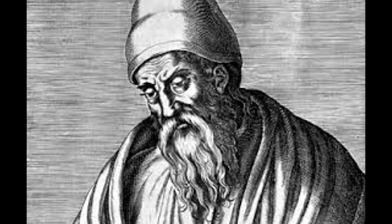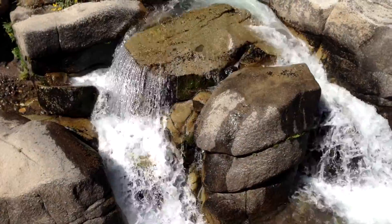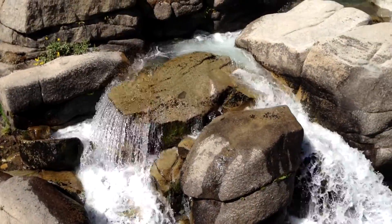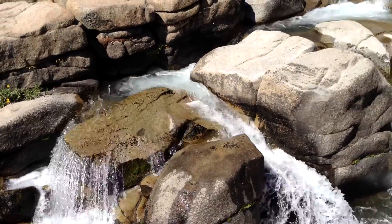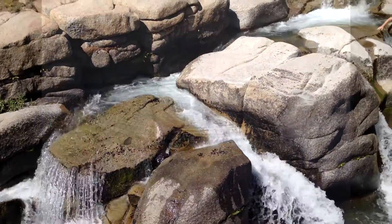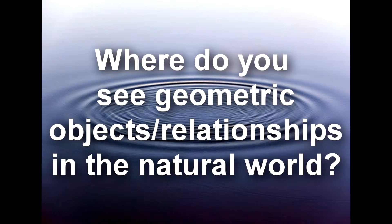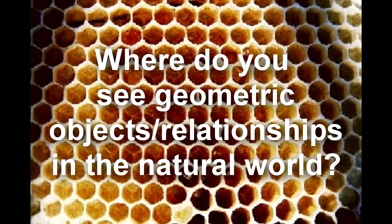But where did The Elements come from? From looking at the natural world around us. So where in your world do you see geometry occurring? And I mean in the natural world — not like train tracks, not something that we as humans have created that fits geometry. But where does it naturally occur?